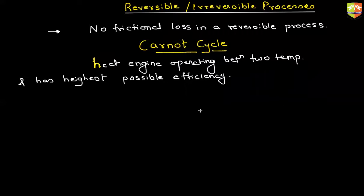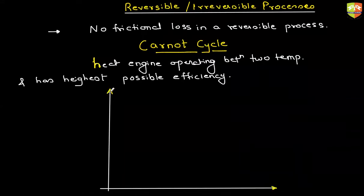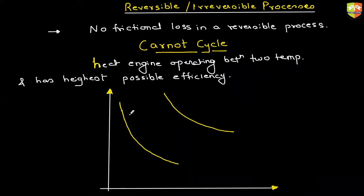We know that the heat engine should absorb heat at constant temperature and release heat at constant temperature. So the absorption and release of heat should happen at constant temperature. Let's say the higher temperature line is this one and the lower temperature line is that one. The cycle should operate between these two lines — these are the two isothermal lines.